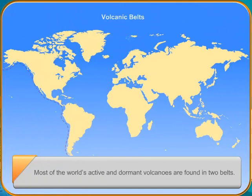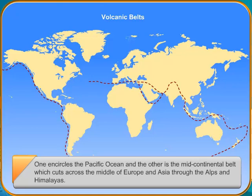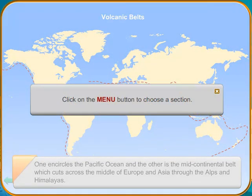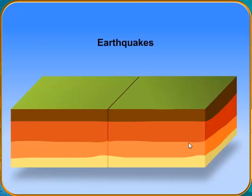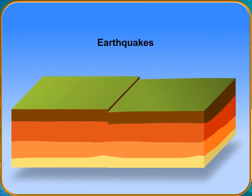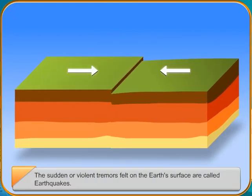Earthquakes. The sudden or violent tremors felt on the Earth's surface are called earthquakes. The Earth is made up of three main layers: the outside, called the crust, is the surface on which we live. Below this is a layer of hot rocks called the mantle. Below this is the inside layer of molten hot liquid called the core.